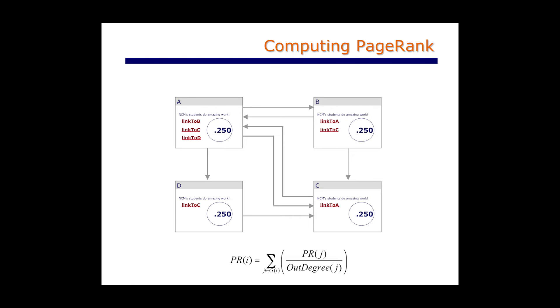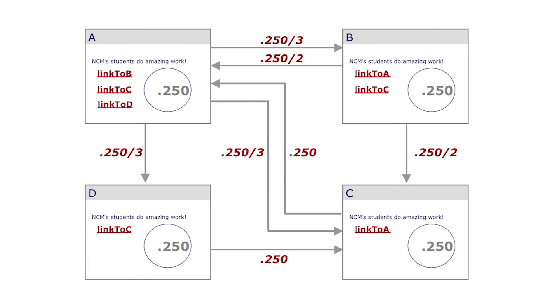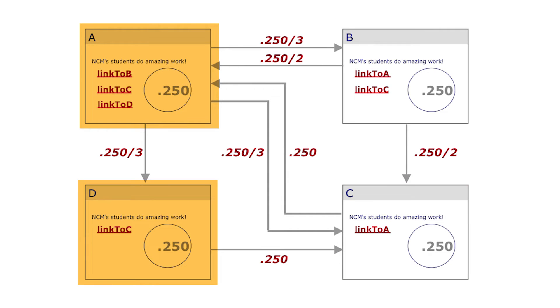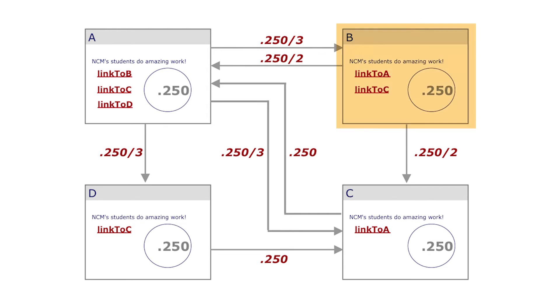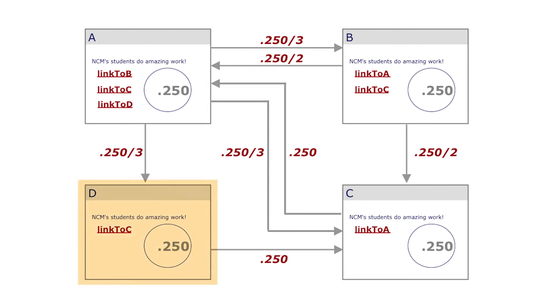After assigning each page an equal value, what we do next is we allocate to every page that a particular page points to a fraction of its page rank. So we take page A's page rank, we look for all the pages that it points to — which are B, C, and D — and we allocate an equal fraction of A's page rank to pages B, C, and D. Similarly, page B points to pages A and C, so we take page B's page rank and divide it equally among the two pages it points to. And we do a similar thing for pages C and D.